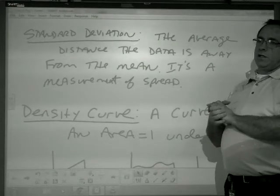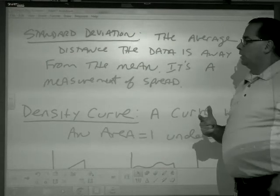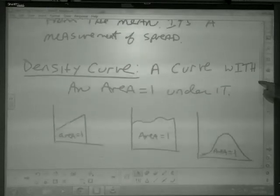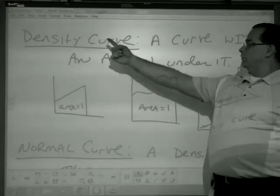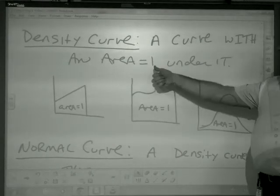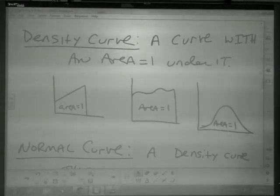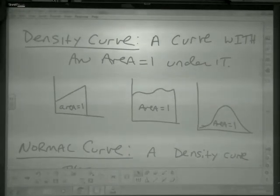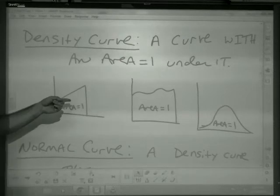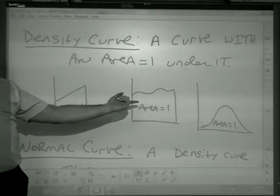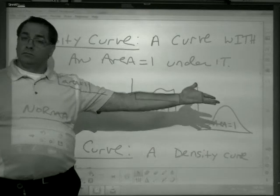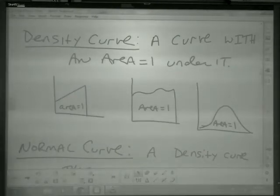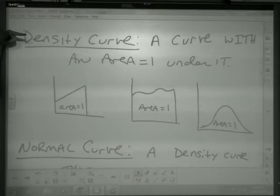What we're going to talk about more specifically is how do we use it as a ruler. In the video you saw the definition of a density curve. A density curve is a curve with area one under it. So I don't care what kind of shape the curve takes on, the area under that curve has an area of one. So it might look like a trapezoid, it might look like something else, it might look like a normal curve, but the area under it is one. And so that's a vocabulary word that occurs to us on multiple choice parts of the test.